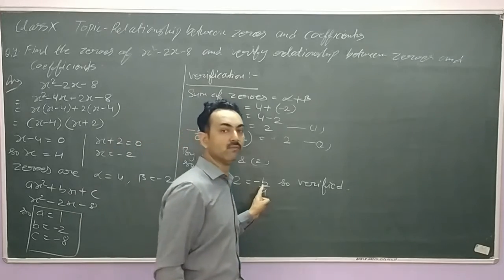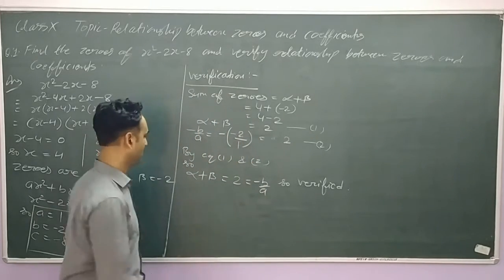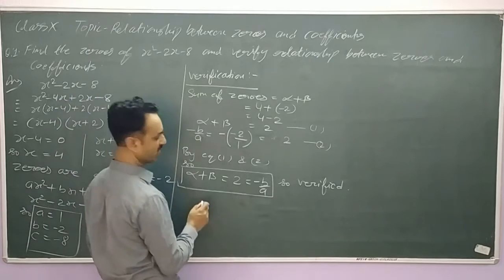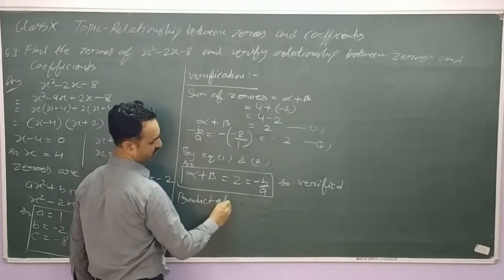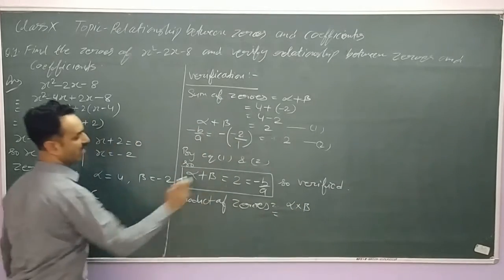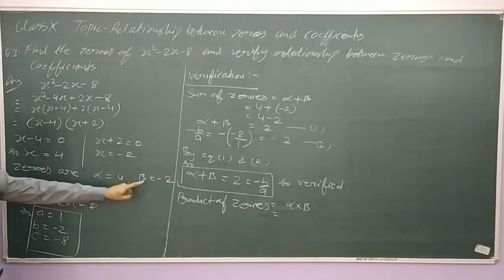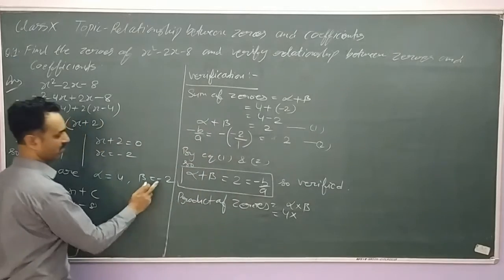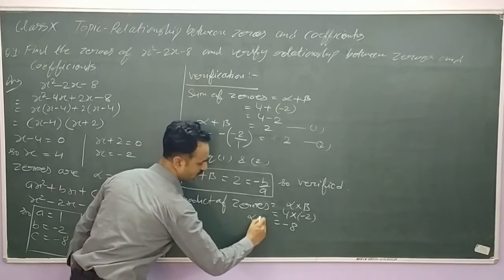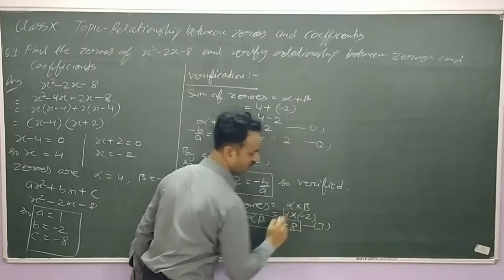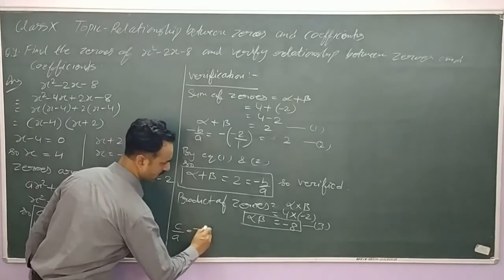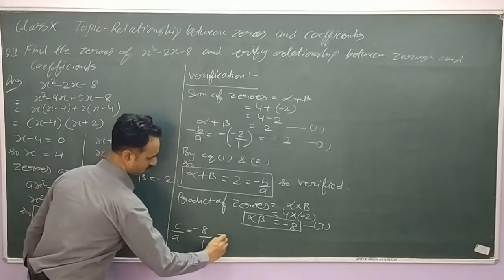Here b is the coefficient of x and a is the coefficient of x squared. Now we verify another relationship — the product of zeros equals alpha into beta. Putting in the values: alpha is 4 and beta is minus 2, so 4 times (minus 2) equals minus 8, therefore alpha beta equals minus 8. Now we find c upon a: c is minus 8, a is 1, so c upon a equals minus 8.